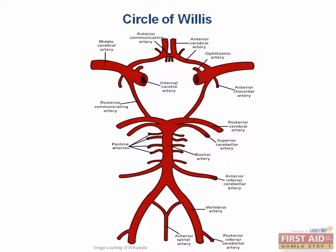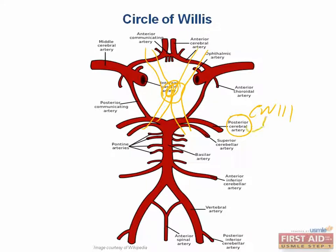Now in the middle of the circle of Willis is what structure? That structure is the optic chiasm. Cranial nerve 3 is also in very close proximity to the PCA. Therefore, you can have a third nerve palsy by virtue of mass effect.